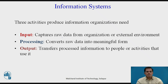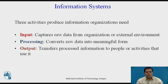Whenever an information system takes input, it takes raw data from organizational databases, organizational servers, or from the external environment. Then the central process converts the raw data into meaningful form, which is very useful for business people. Business people or administrators then receive the output — that is, the transferred processed information to people or activities that use it.